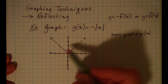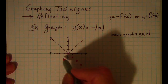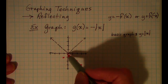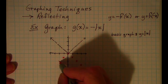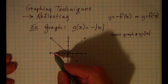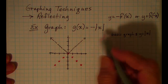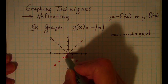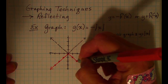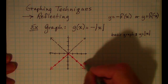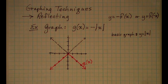Now to the left of my vertex: when x is negative one, my y value on the basic graph is positive one, but I want to negate that. When x is negative two, my y value is positive two, but I want to negate that. When x is negative three, my y value is positive three, but I want the negative of that. So my g(x) function looks like this.